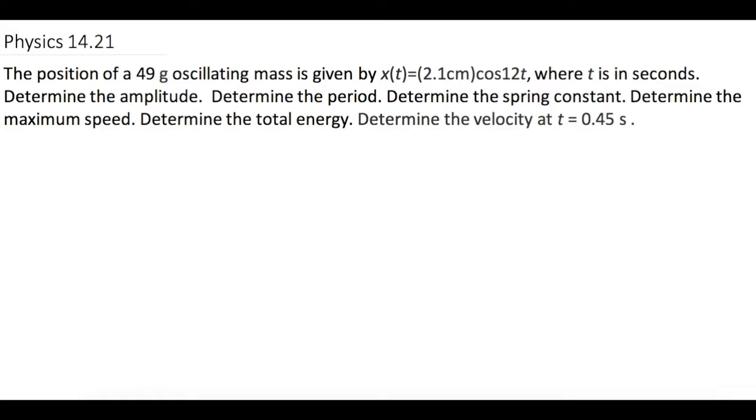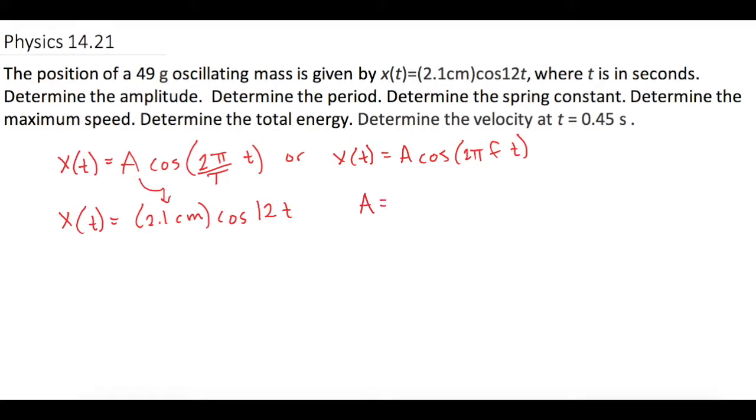First off, let's just talk about this equation real quick. Where they're getting it is from the chapter summary. They tell us that a position versus time graph has an equation of a times the cosine of either 2 pi over t times the time, or x of t equals a times the cosine of 2 pi f times t. So what they're doing is giving you the equation with stuff plugged into it. They say x of t equals 2.1 centimeters times the cosine of 12 t. And then they said, what is the amplitude? So first off, a is right there, 2.1 centimeters.